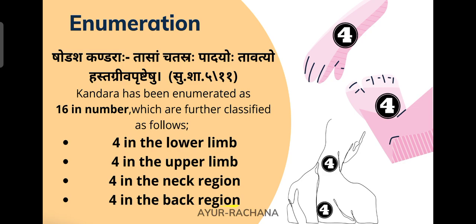This diagrammatic representation helps you recall it easily — 4 in the leg, 4 in the upper limb, 4 in the neck, and 4 in the back region. This concludes the enumeration of Kandara.